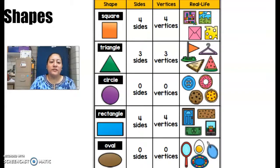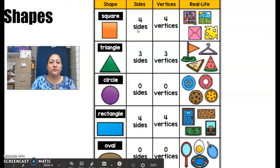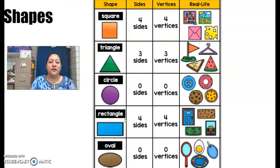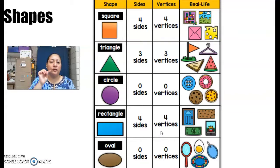Today and this week we will continue to learn about 2D shapes. The shapes we're going to be talking about are the square, which has four sides and four vertices or four corners; the triangle, which has three sides and three vertices or three corners; the circle, which has no sides and no vertices; and the rectangle, which has four sides and four vertices. Remember, the vertices are the points or the corners.